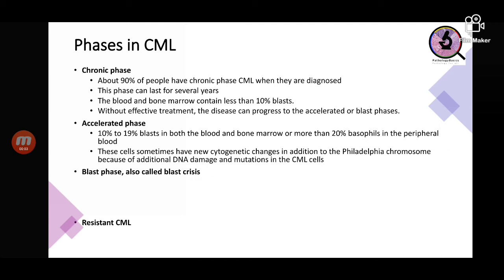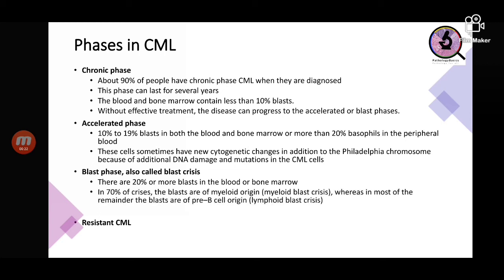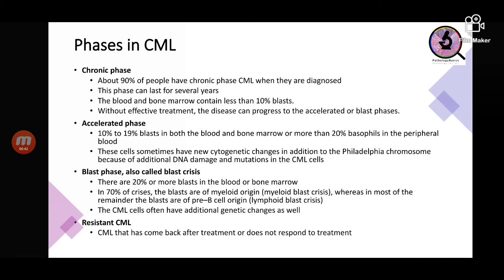In blast phase (blast crisis), there are more than 20 percent blasts in the blood or bone marrow. In 70 percent of cases the blasts are myeloid — myeloid blast crisis — while in the remainder they may be lymphoid blasts. Additional genetic mutations lead to blast crisis. CML resistant phase refers to disease that returns after treatment or does not respond to treatment at all.